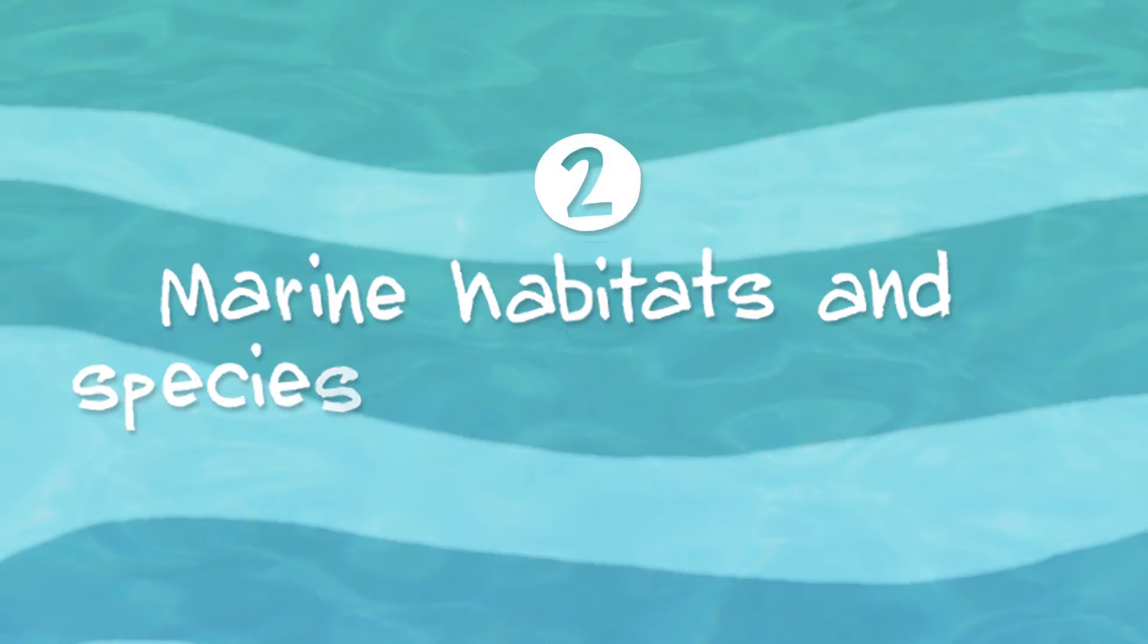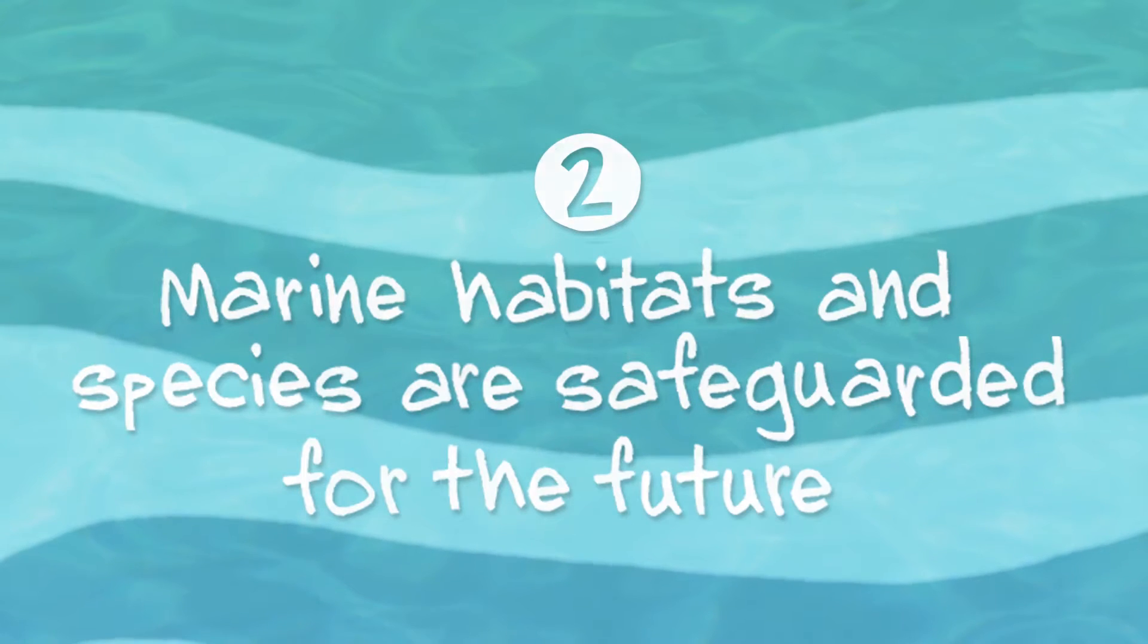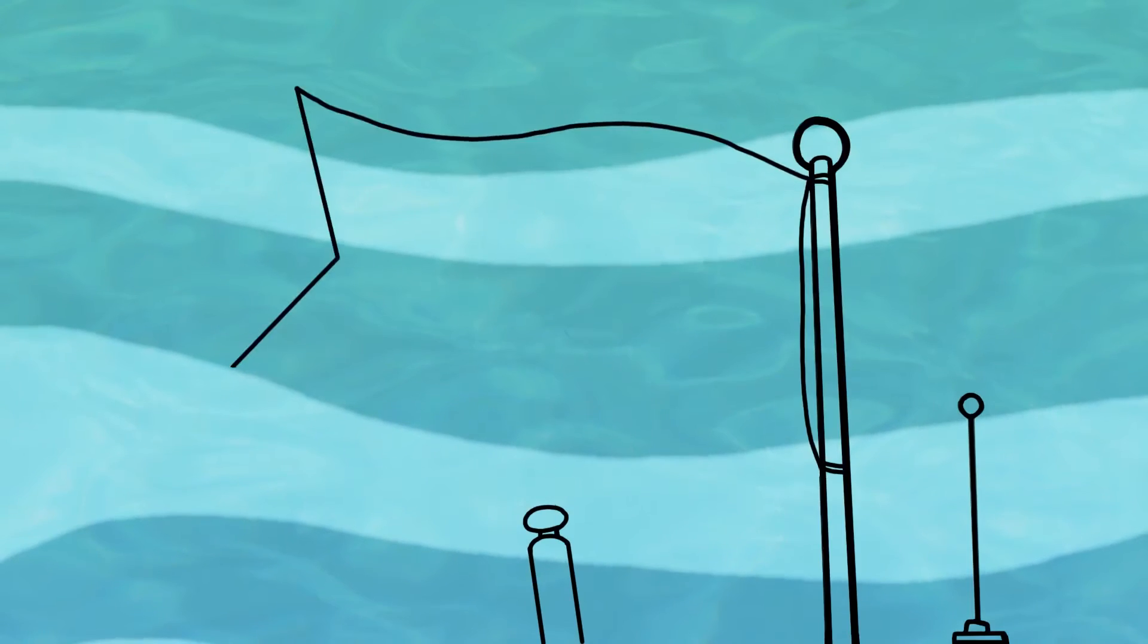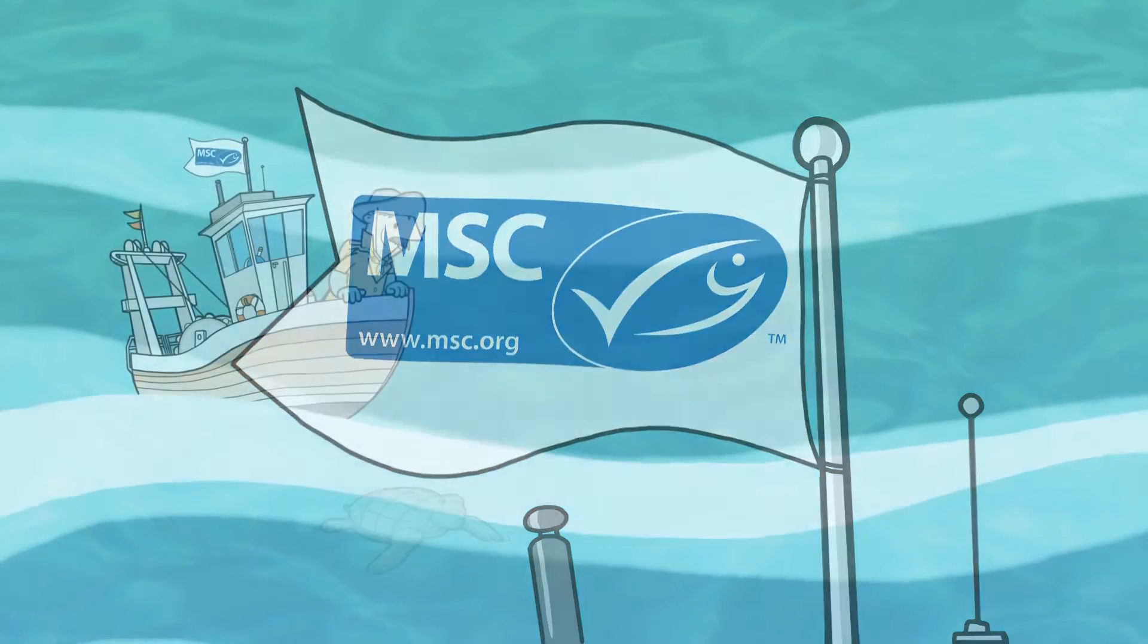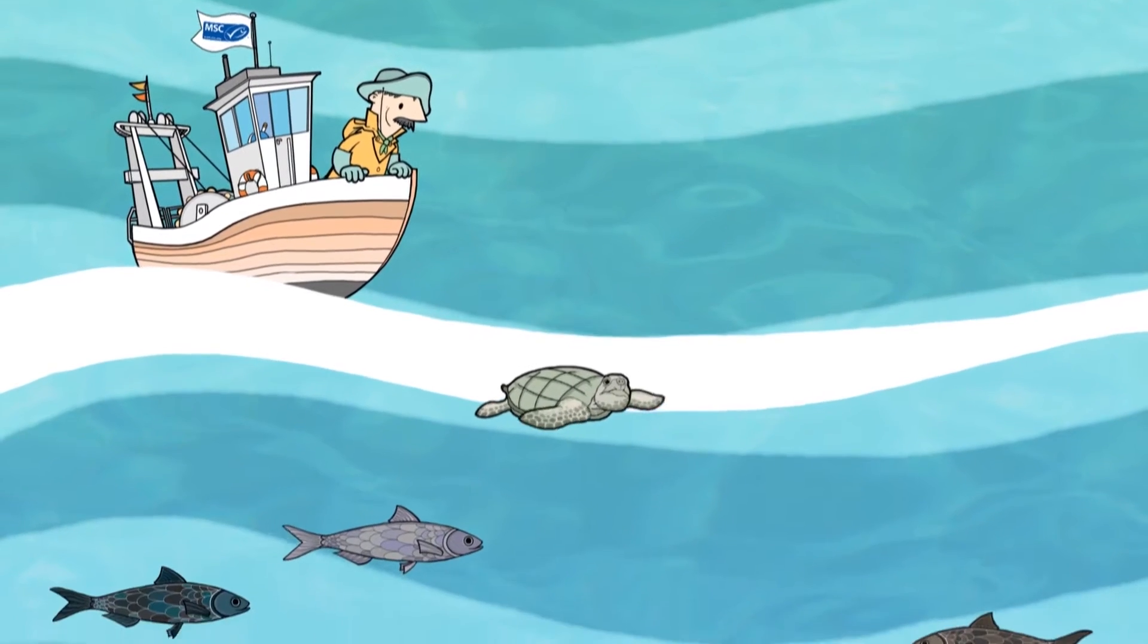What does the MSC label mean? It means that marine habitats and species are safeguarded for the future. A fishery is only certified to the Marine Stewardship Council's standard if it minimizes its impact on marine ecosystems.